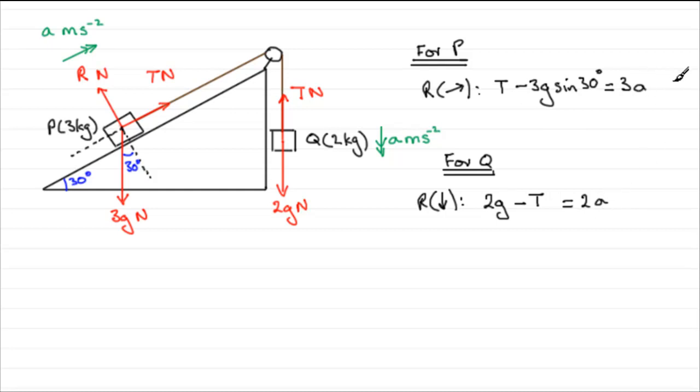So like all simultaneous equations I would number them. So I'm going to number them 1 and 2. And the best way that we can solve this in my opinion is to just simply add the two equations because we've got a T here and a minus T and by adding T minus T that's going to go to 0.